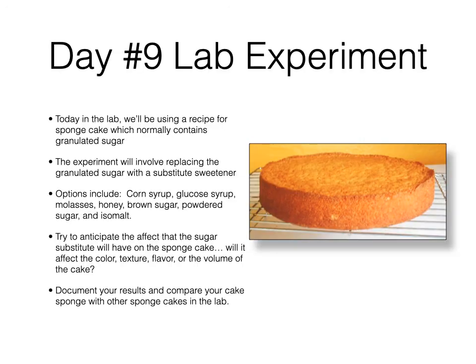In today's lab, we're going to replace sugar in a sponge cake. The experiment involves replacing granulated sugar with a substitute sweetener — your options include corn syrup, glucose syrup, molasses, honey, brown sugar, powdered sugar, isomalt, or any other sugar. Take the regular recipe, use a different sugar, and see how that affects things. Try to anticipate the effect your sugar substitute will have on the sponge cake — how it will affect color, texture, flavor, or volume. Document your results and compare your sponge cake to others in the lab. Come to class ready with your uniform and your mask.